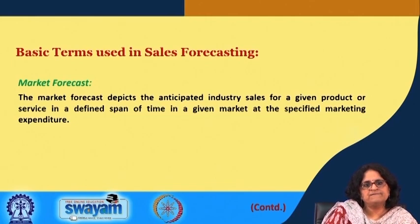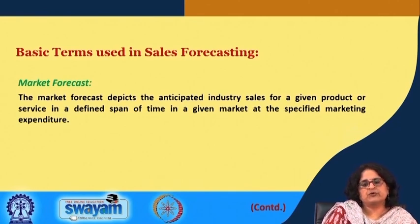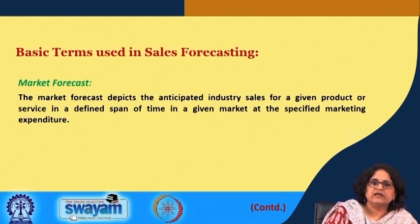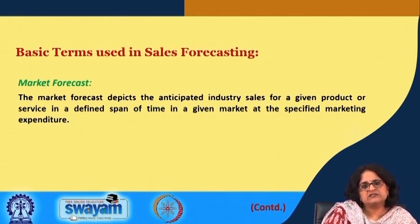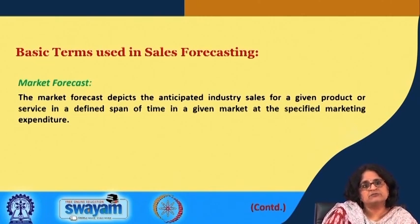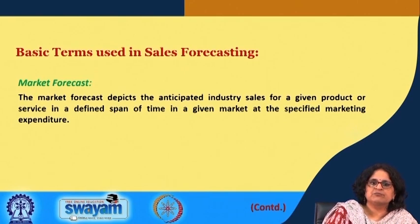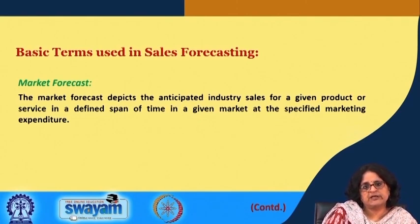The second key term is market forecast. The market forecast is the anticipated industry sales — while market potential is the maximum, the market forecast is what the industry expects or anticipates to earn for a given product or service in a defined time span, in a given market, and within a specified marketing expenditure. The maximum sales becomes the market potential, but the anticipated sales becomes the forecast. So the market forecast depicts the anticipated industry sales for a given product or service, in a defined time span, defined market, and with a stipulated marketing expenditure.